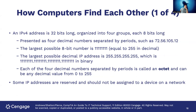How do computers find each other? IPv4 is an address with 32 bits divided into four groups of eight bits each — we call those octets. It's presented as four decimal numbers separated by periods, like 192.168.1.1. The largest possible 8-bit number is 255 in decimal, so the largest possible IP address is 255.255.255.255. Each of the four decimal numbers — each octet — can be any value between 0 and 255.